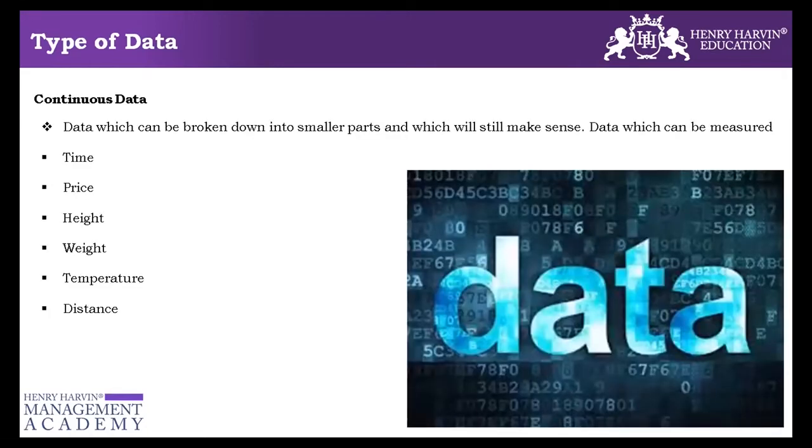What is continuous data? Continuous data is a sort of data which can be broken down into infinitely different smaller units and it still makes sense. There are a few examples that we can see here. We have time. So if I have time here, like if I say five hours, I can convert hours into minutes. I can convert minutes into seconds. I can convert seconds into milliseconds. So time I can further break.